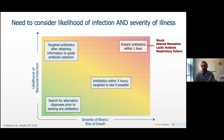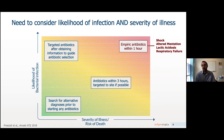So how do we consider diagnosing sepsis? Sepsis really has two axes, as put together most notably by Hallie Prescott et al. in the Annals of the ATS in 2018. One axis is the likelihood of bacterial infection on the y-axis, and the severity of illness and risk of death on the x-axis. Somebody with very severe illness — shock, altered mentation, lactic acidosis, or respiratory failure — and a reasonably high likelihood of bacterial infection deserves antibiotics within an hour. Patients without a high risk of death but with a high likelihood of bacterial infection deserve targeted antibiotics after obtaining information to guide antibiotic selection. Those in the middle with moderate infection and severity risk probably deserve antibiotics within three hours, eventually targeted to site. Whereas patients who don't have a risk of either bacterial infection or death probably deserve a more intensive search for an alternate diagnosis prior to starting antibiotics at all.